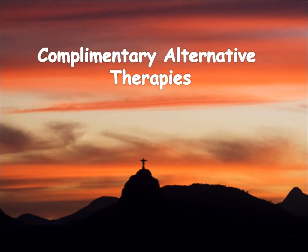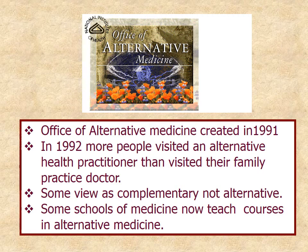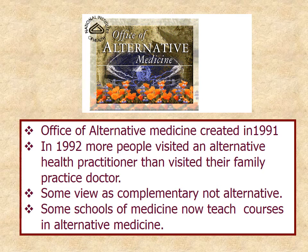Now let's talk about complementary alternative therapies. We're one of the few schools that has a section on this, but they've become much more popular — people are using them almost as much as they visit a primary care physician. The Office of Alternative Medicine was created in 1991, and by 1992 more people visited an alternative health practitioner than visited their family doctor. That's when people really started to take notice. What were once considered eastern medicine or fringe ideas are now quite mainstream, and some schools of medicine teach courses in alternative medicine.